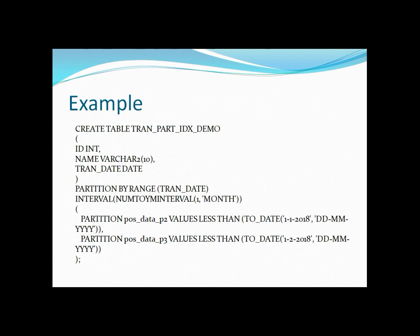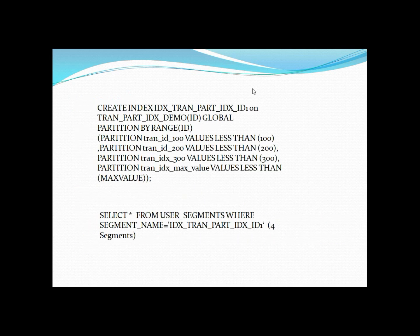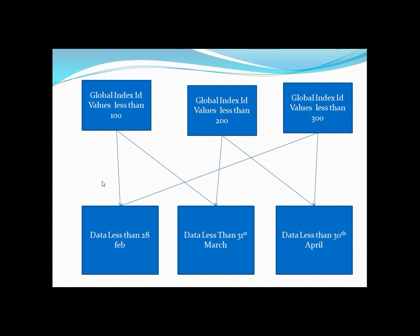Now let's look at global index maintenance in Oracle 12c. Here I'm creating an interval partition table partitioned on the column 'transaction_date', with three columns: id, name, and transactions. I'm then creating a global partitioned index on the column 'id' with four partitions: values less than 100, less than 200, less than 300, and a final partition covering all values up to the max. A key property of globally partitioned indexes is that one index partition can contain keys from multiple table partitions — for example, this index partition contains keys for data before 28th Feb and before 31st March, and similarly for the next two partitions.